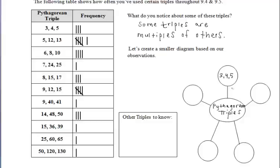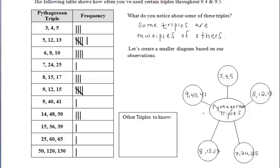Starting from the top of the chart: 3, 4, 5 is a triple. 5, 12, 13 is another one. 6, 8, 10 is just part of the 3, 4, 5 family, so we don't have to memorize that. 7, 24, 25 is another triple. 8, 15, 17 is another triple — we can't reduce it further; it's not part of any of the others. 9, 12, 15 is just part of the 3, 4, 5 family, so we don't have to memorize that. 9, 40, 41 is another one. And 14, 48, 50 is part of the 7, 24, 25 triple family multiplied by 2.